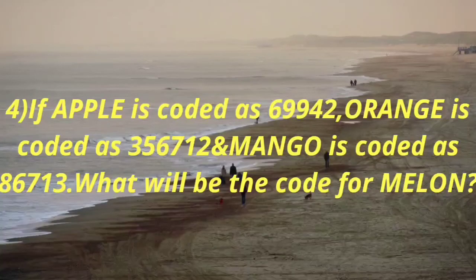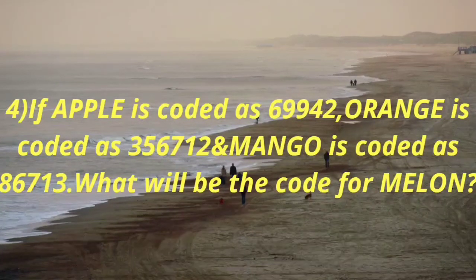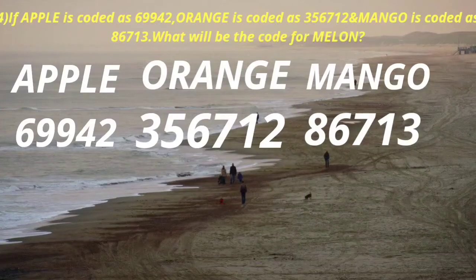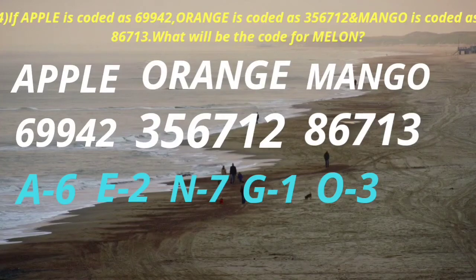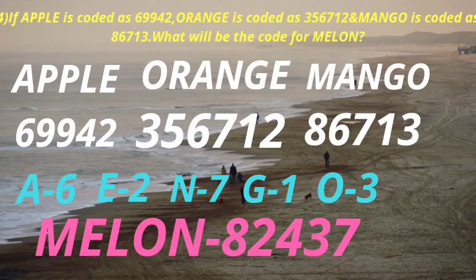Next is a question from coding and detective logic. If apple is coded as 69942, orange is coded as 356712, and mango is coded as 86713, what will be the code for melon? For each particular alphabet, one number is assigned: A is 6, E is 2, N is 7, G is 1, and O is 3. So for melon: M is 8, E is 2, L is 4, O is 3, N is 7. The answer is 82437.